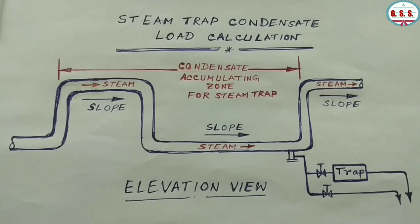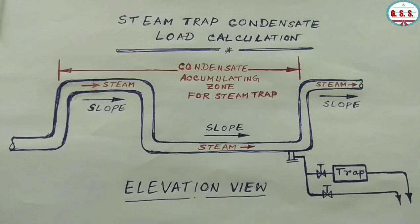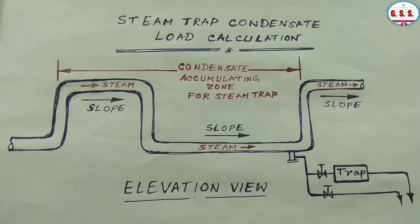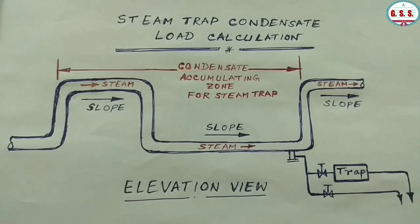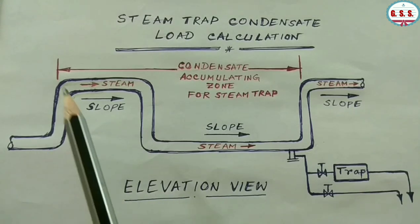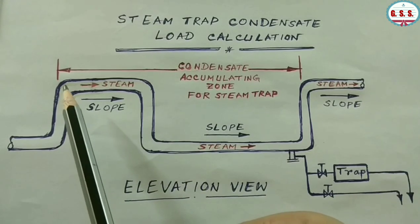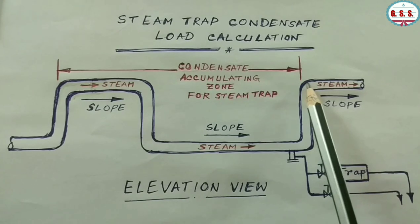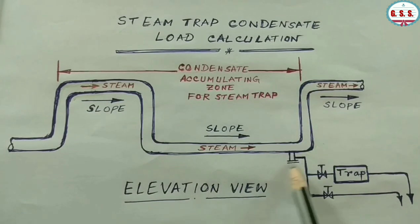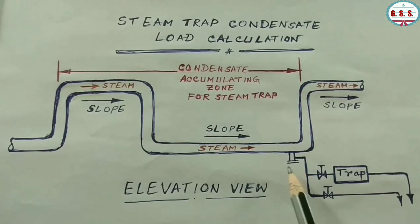In this elevation view, a steam line is shown. Since the steam line has a slope along the flow, in this piping configuration, the condensate accumulating zone is from the left side top bend to the right side top bend, and the location of the trap is close to the lower bend.